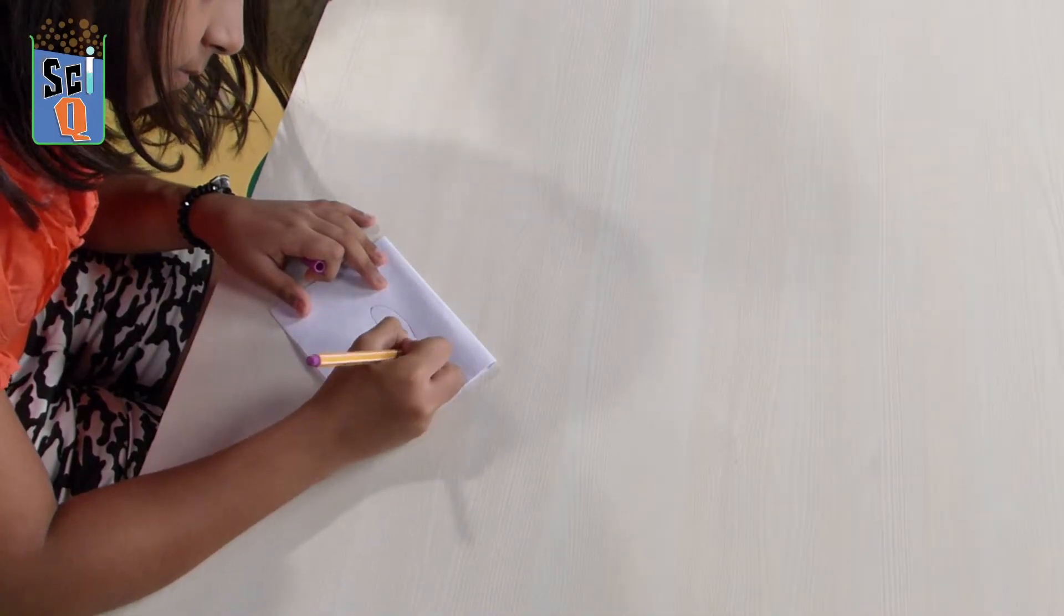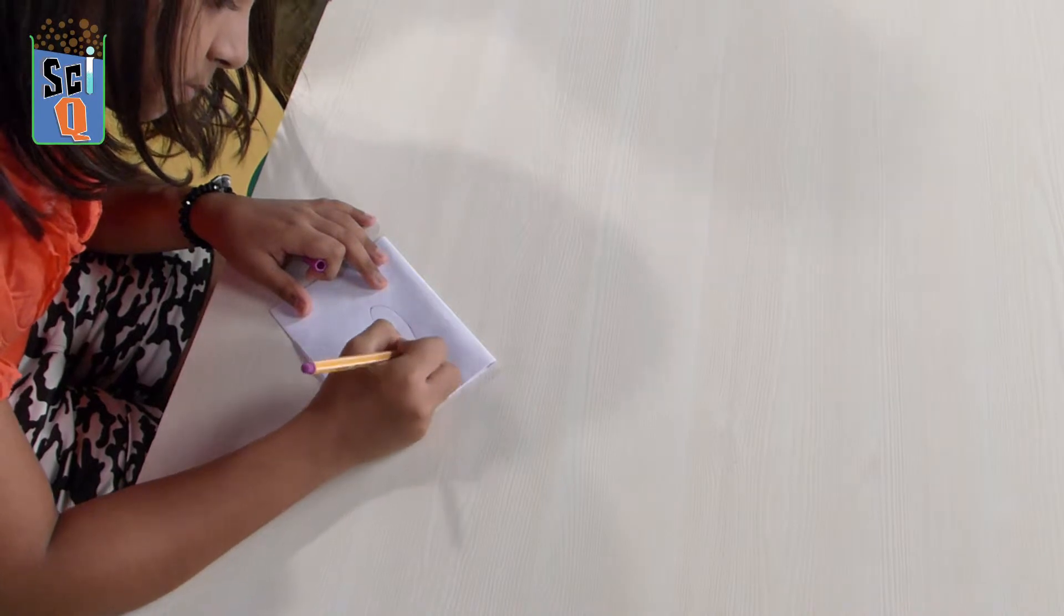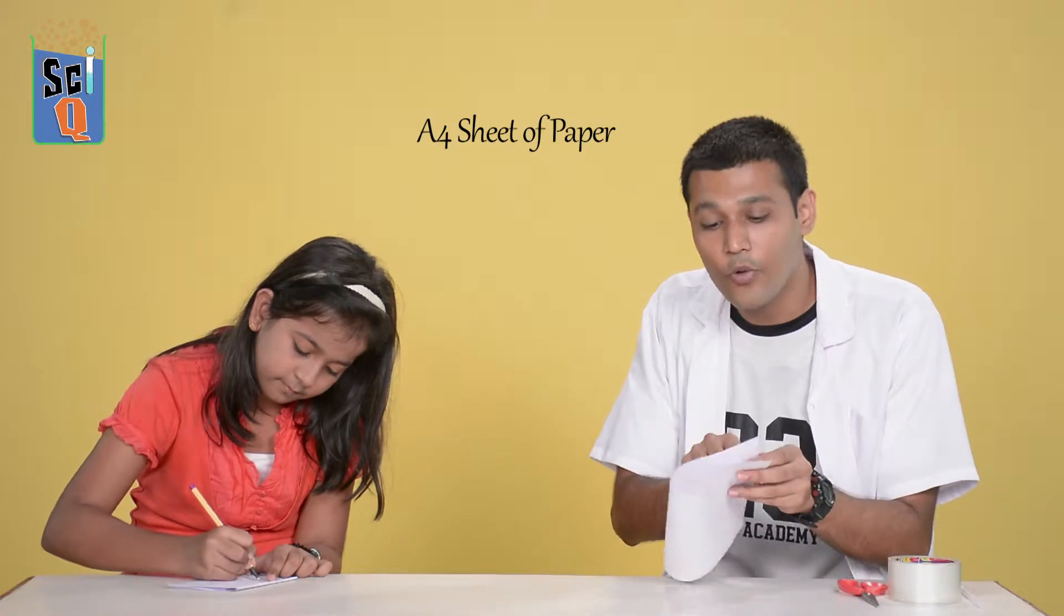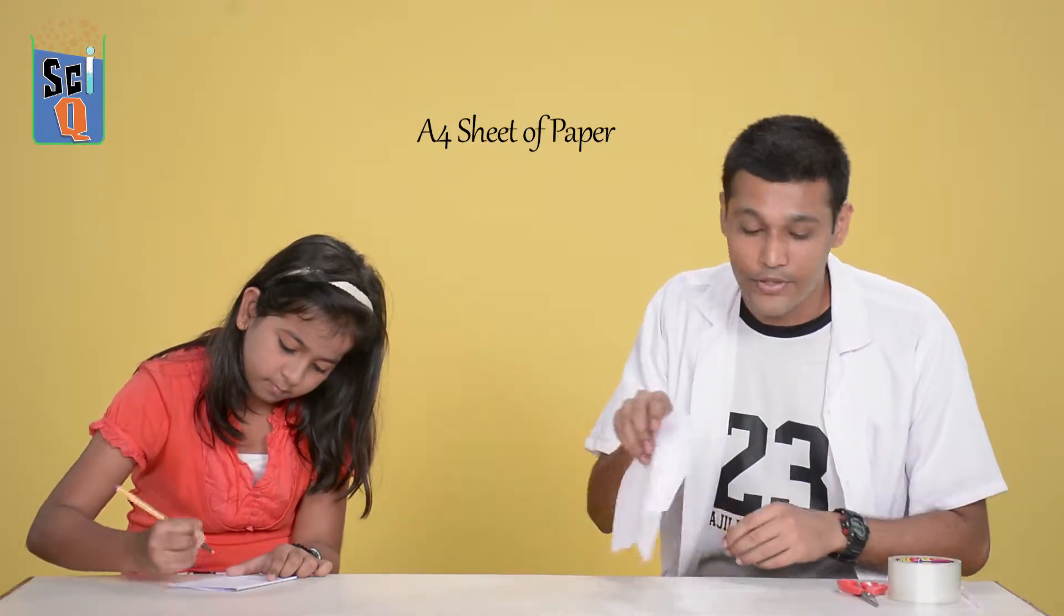So now while she's drawing what I asked her to do, let's talk about what we're going to need for this experiment. For starters, you're gonna need an A4 sheet of paper. What I've done is I've folded it four times and then I've given it to her.